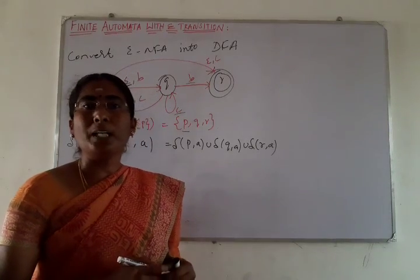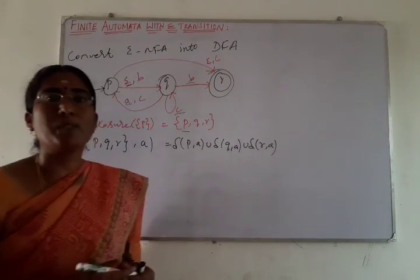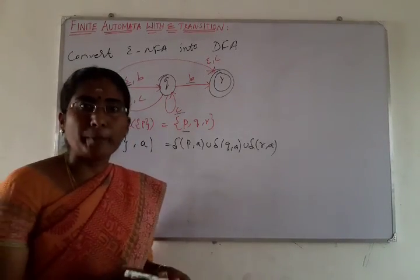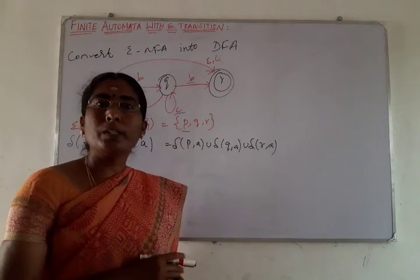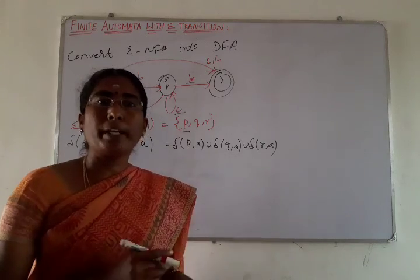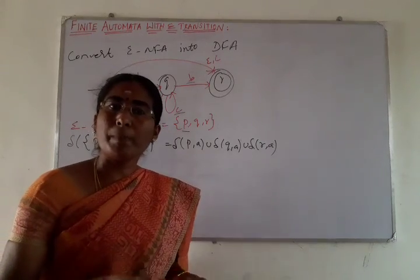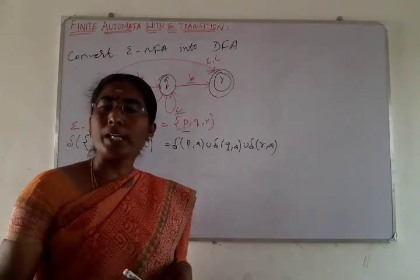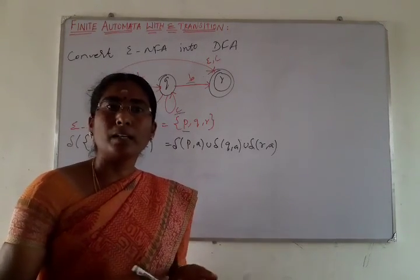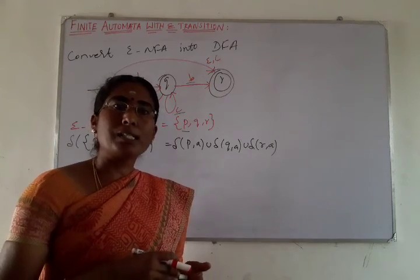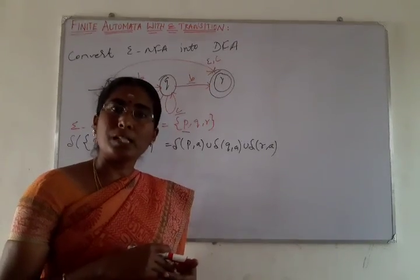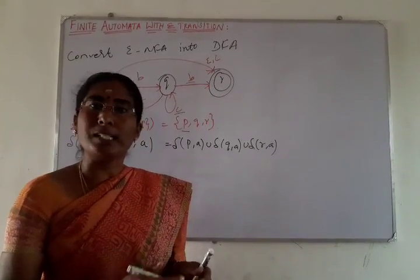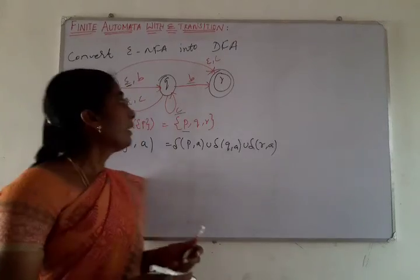Hello friends. Now we will convert this epsilon NFA into a DFA. To do this, we compute the epsilon closure for each and every state. First, we will start with the start state — we have to find out the epsilon closure of the start state.